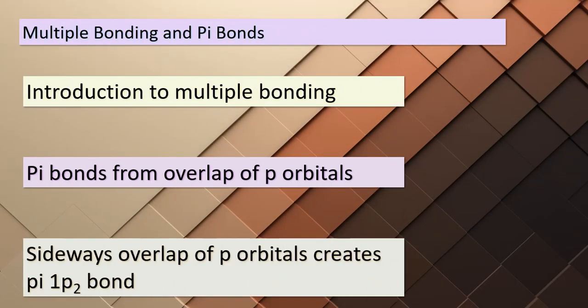Today we're delving into the fascinating realm of multiple bonding and exploring a different type of bond known as the pi bond. To understand multiple bonding, we need to introduce the overlap of p orbitals. When two p orbitals orient perpendicularly to the internuclear axis and overlap sideways, they create a pi bond. Unlike the electron density concentrated along the internuclear axis in a sigma bond, in a pi bond the overlap regions lie both above and below the internuclear axis. It's important to note that due to the sideways orientation of p orbitals, the overlap in a pi bond is weaker compared to that in a sigma bond. Consequently, pi bonds are generally not as strong as sigma bonds.